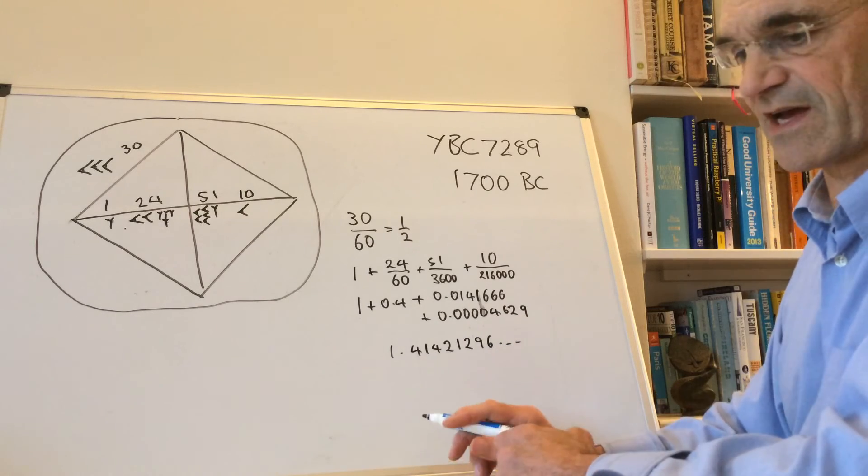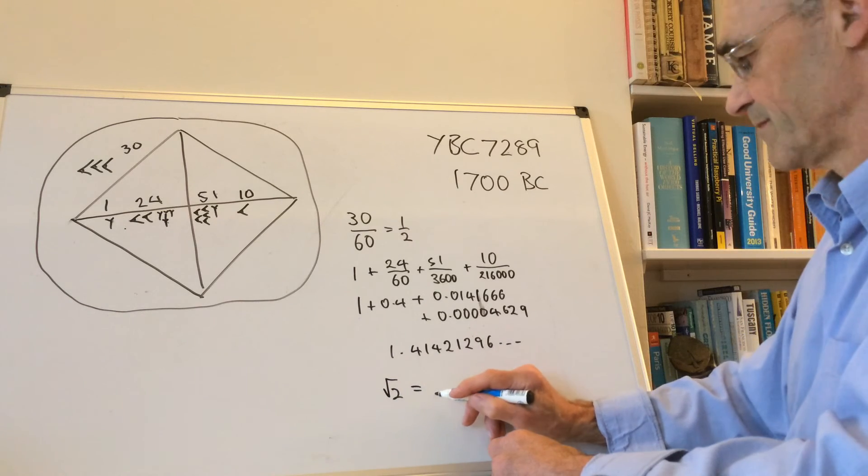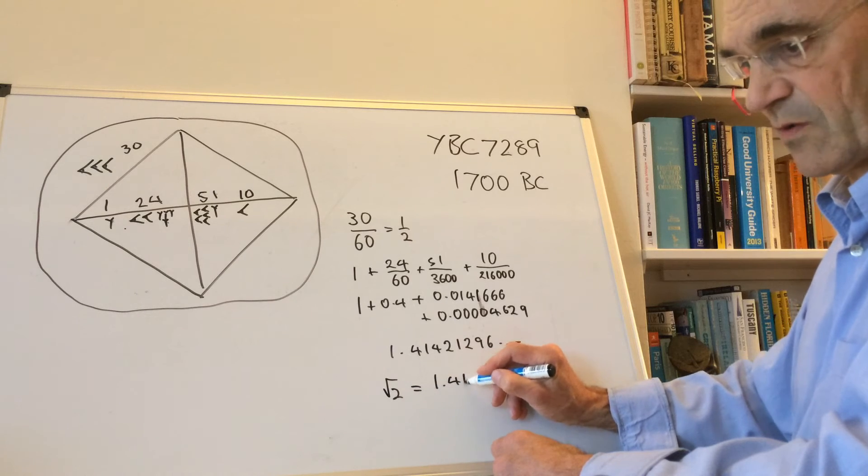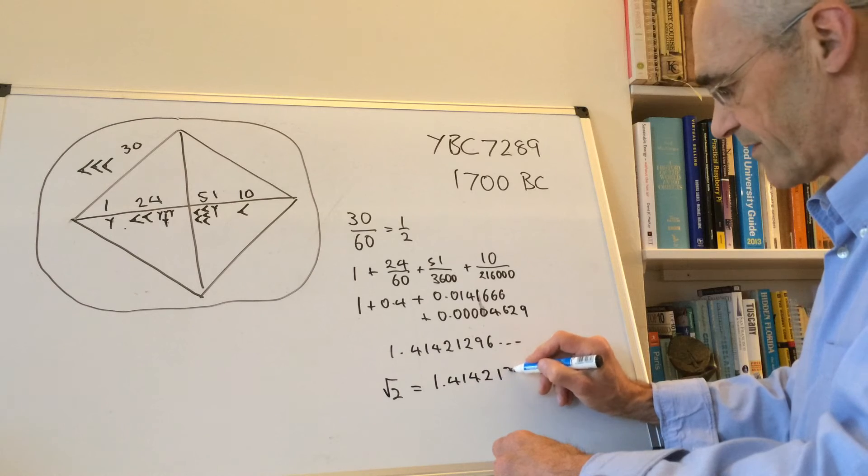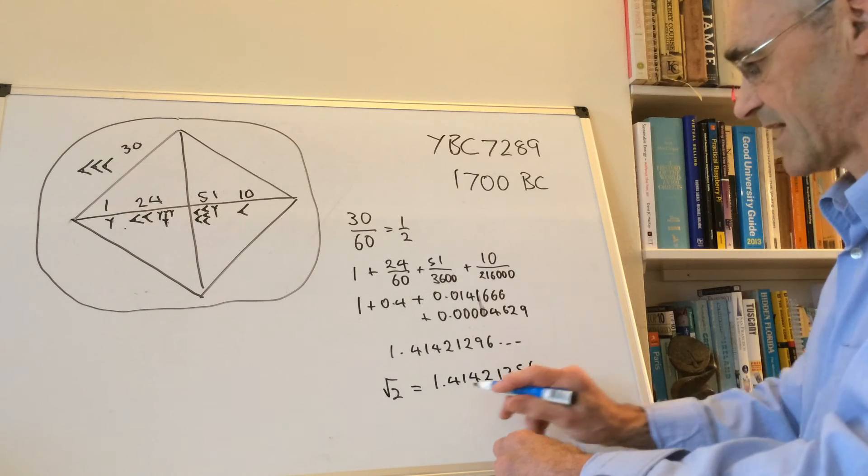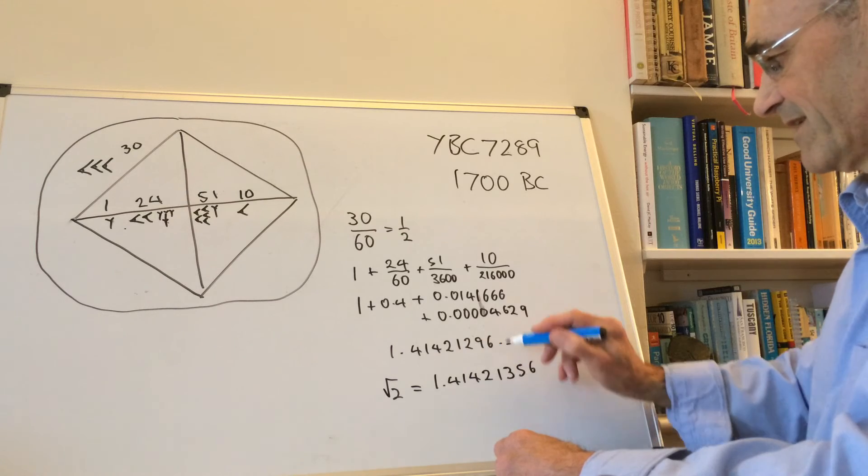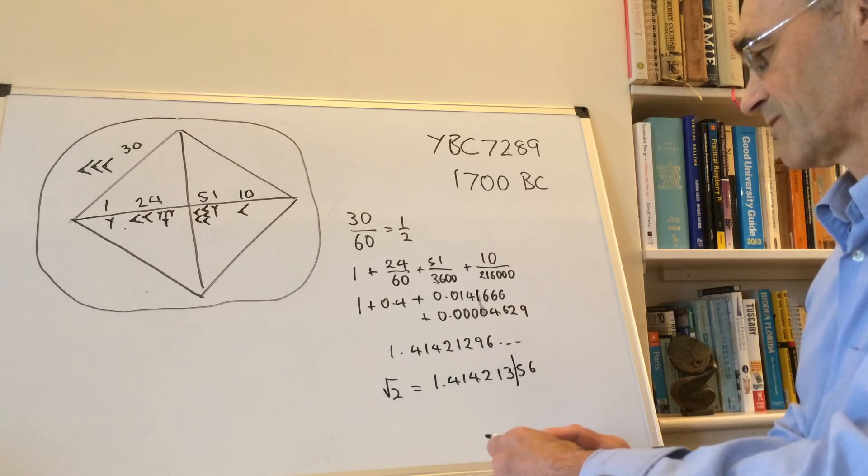The actual value of the square root of 2 to a similar number of decimal places is 1.41421356. We actually don't get an error here until we get up to that many decimal places.